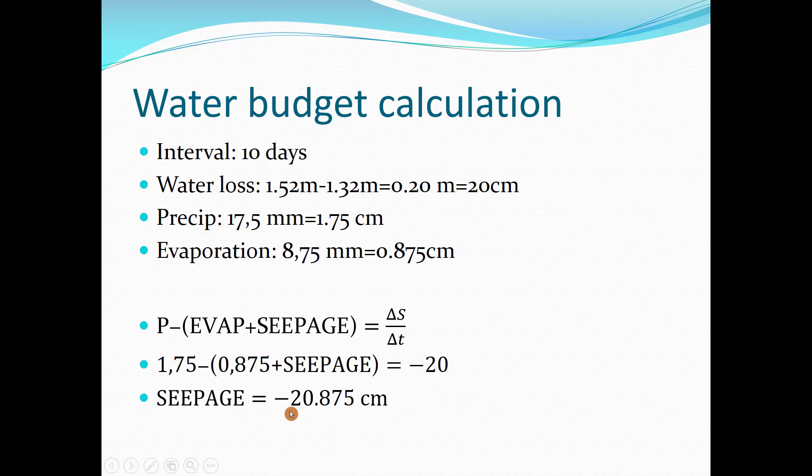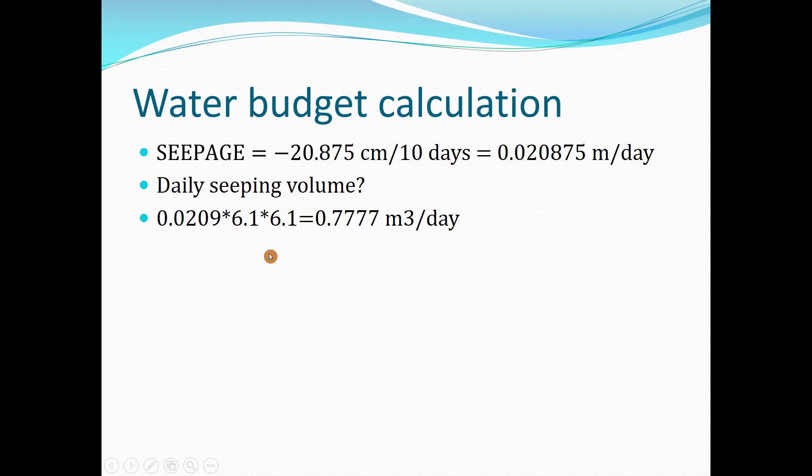We lost minus 20.875 centimeters for 10 days, but daily seepage is 0.020875 meters per day. If you want to find the volume, we have to multiply this number by the area of the pool.